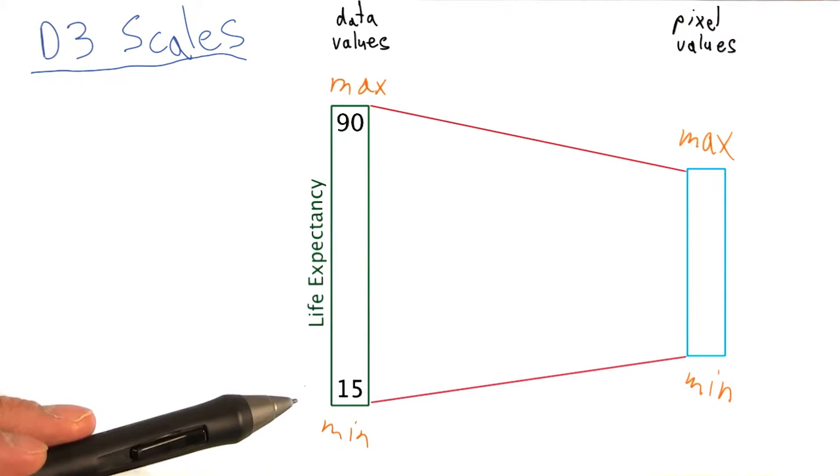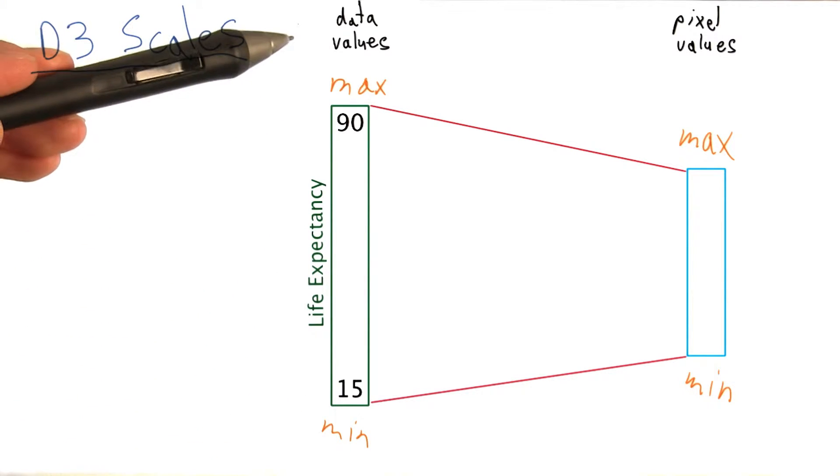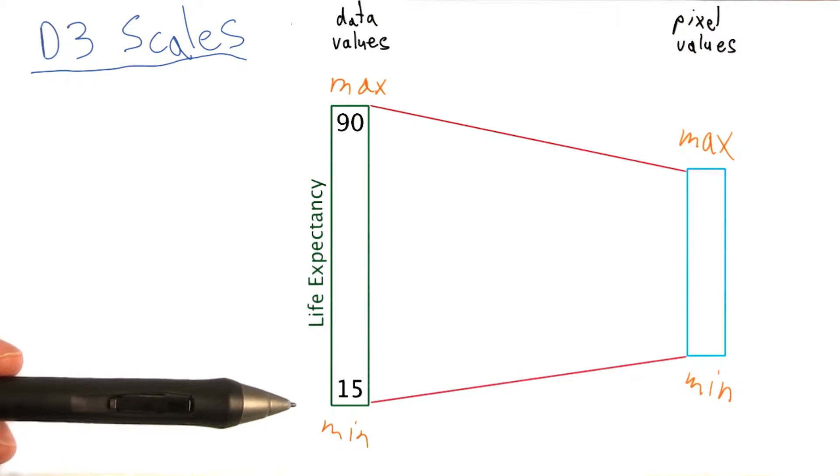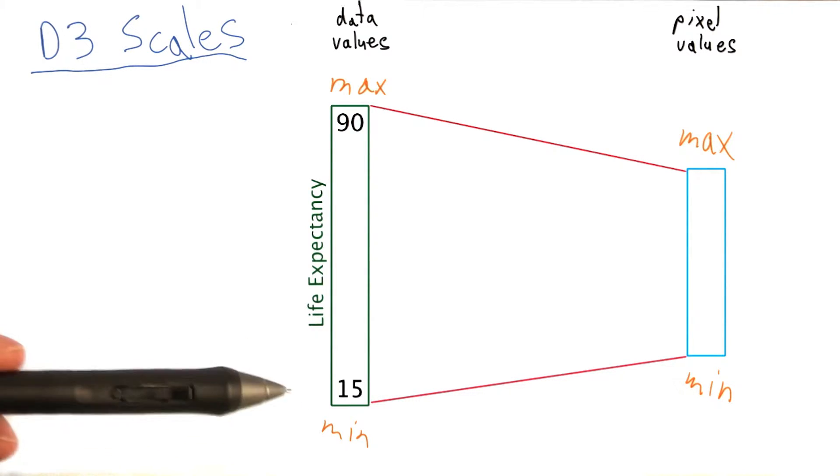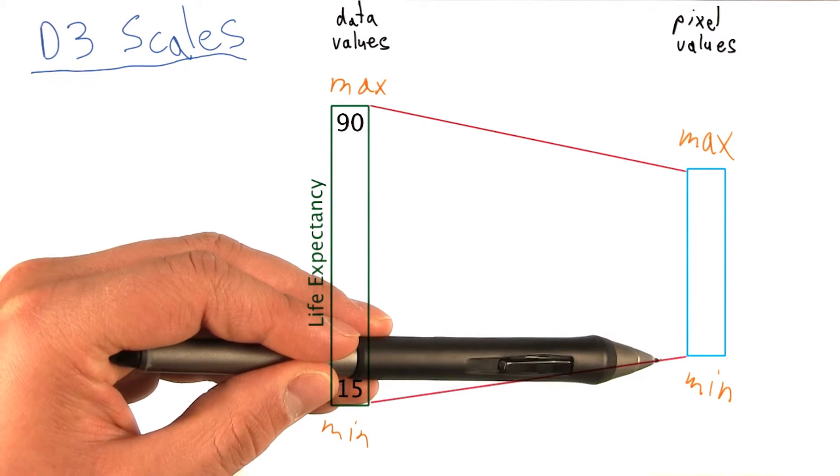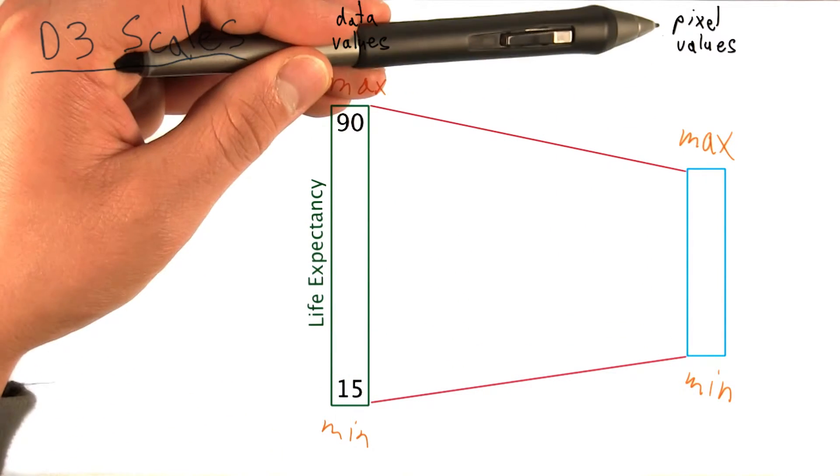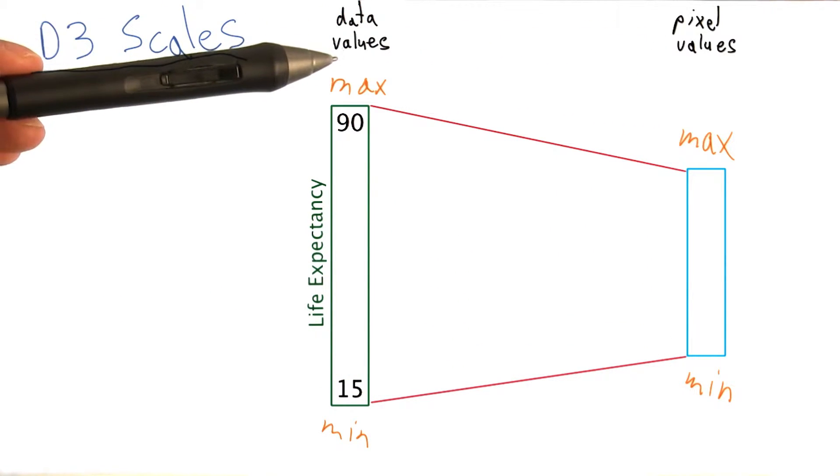The green square on the left represents the value of our data. In this case, the actual numeric representation of what the life expectancy is. And this blue rectangle represents what pixel values we want to map the data values to.